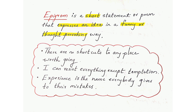Epigram is a short statement or poem that expresses an idea in a funny or thought-provoking way. You often find an epigram at the beginning of a book — a one-liner or small poem conveying a deep meaning. Examples: 'There are no shortcuts to any place worth going,' 'I can resist everything except temptation,' 'Experience is the name everybody gives to their mistakes.' These one-liners convey a very thought-provoking message simply and concisely.